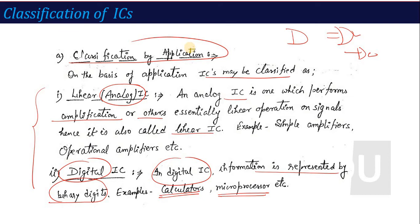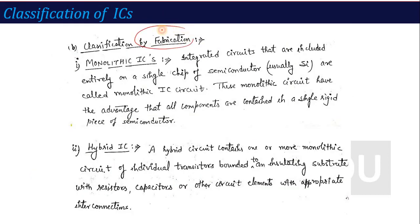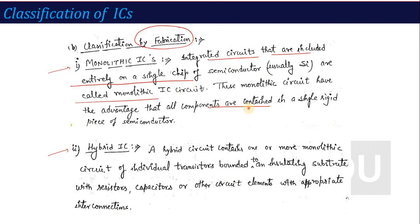The second category is classification by fabrication. ICs can be divided into monolithic and hybrid types. Monolithic integrated circuits are those where all components are included entirely on a single chip of semiconductor, usually silicon. The advantage of monolithic ICs is that all components are contained in a single rigid piece of semiconductor.